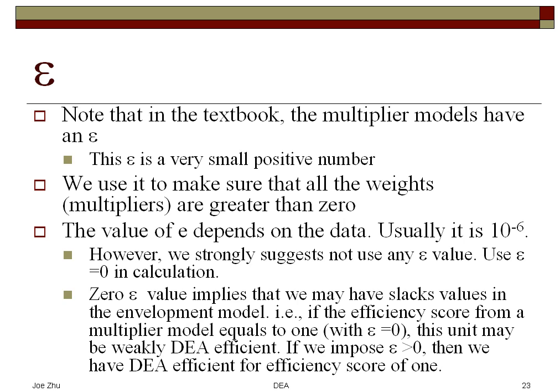In fact, if you run your spreadsheet model a couple of times for one particular DMU, depending on the initial values you put into those cells, you may get a different set of optimal weights. Of course, the efficiency score should always be the same. That's why people add this epsilon. But again, this epsilon depends on the data you use — if the data values are very small, you have to use a real, real small number. If you set epsilon at zero, you can still have zero optimal multipliers and slacks, meaning the DMU is only weakly efficient.